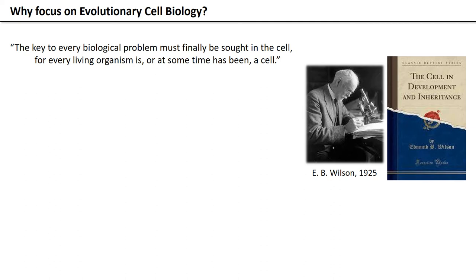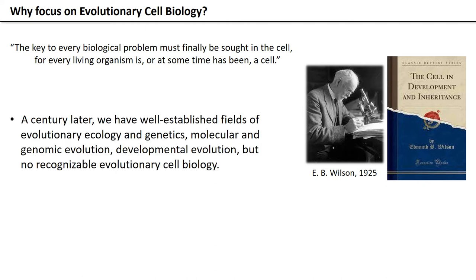Having spent a considerable amount of time working on evolution at the molecular and genomic level, I began to become interested in extending the general principles developed there to a higher level of organization. The next logical step seemed to be the cell. The reasons for this are encapsulated in this quote from E.B. Wilson's book: 'The key to every biological problem must be finally sought in the cell, for every living organism is or at some time has been a cell.' We have well-established fields of evolutionary ecology and genetics, molecular and genome evolution, and developmental evolution, but there's no recognizable evolutionary cell biology — for some reason, we've jumped right over the cell.